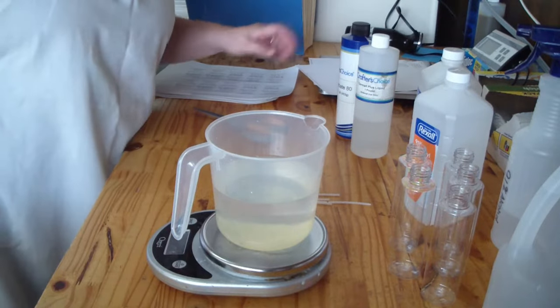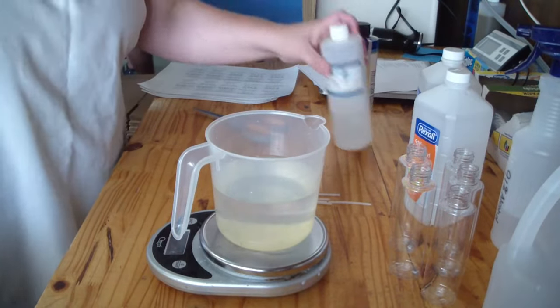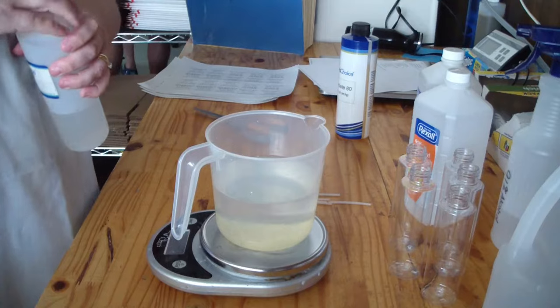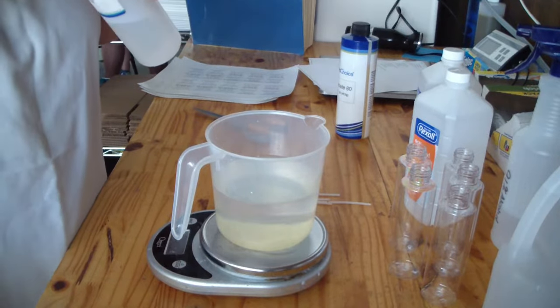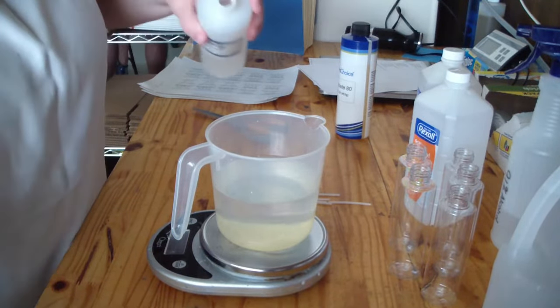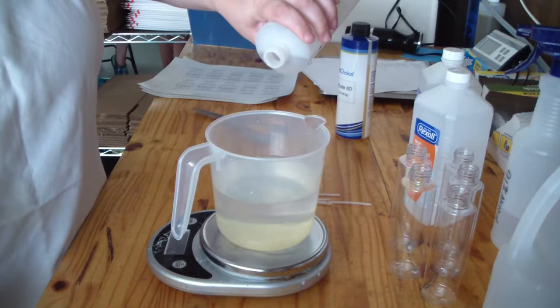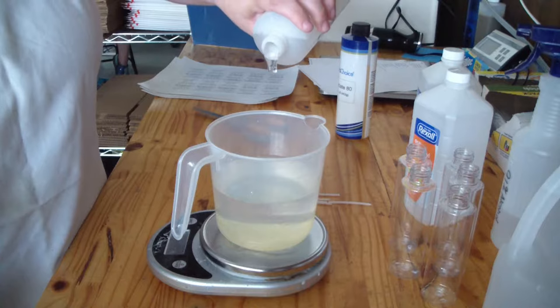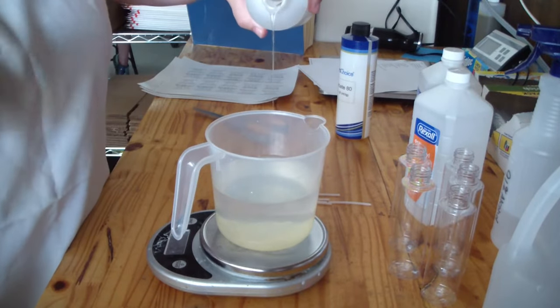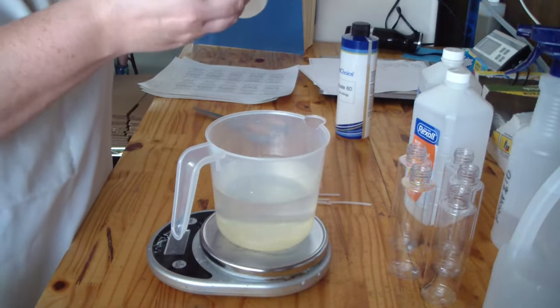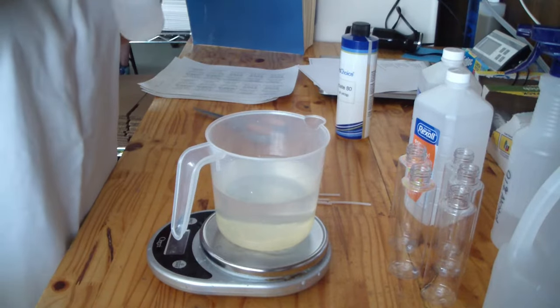We need one ounce of fragrance and 0.10 of our preservative. So I'm going to grab my preservative, get the little sealer off, and I'm going to go slowly. I'm going to touch my scale and just like that I'm already there.